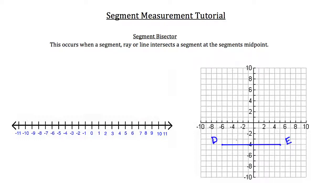A segment bisector occurs right at the midpoint of segment DE. Since segment DE runs from negative 6 to positive 5 on the x-axis, it has a length of 11 units — that's the absolute value of negative 6 plus negative 5. Half of 11 is 5 and a half units. Counting inward 5 and a half units from point E at x equals 5 brings you one half unit to the left of the y-axis.